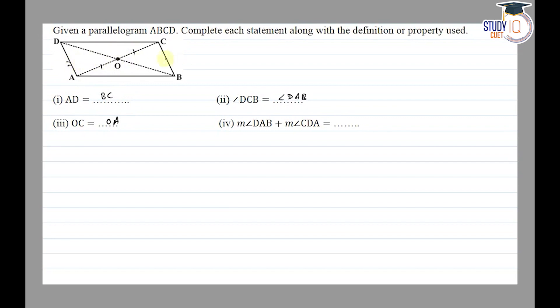This equals this and this equals this. Then angle DAB plus angle CDA, so the interior angles. The sum of interior angles is equal to 180 degrees. Thank you.